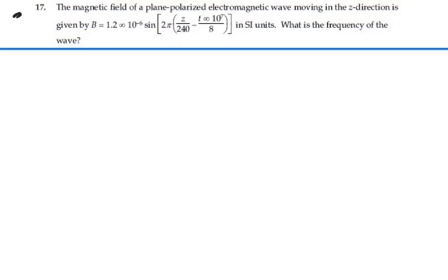Here's problem 3417. The magnetic field of a plane-polarized electromagnetic wave moving in the z-direction is given by B equals 1.2 times 10 to the minus 6 sine 2π(z/240 - t times 10 to the 7 over 8) in SI units. What is the frequency of the wave?